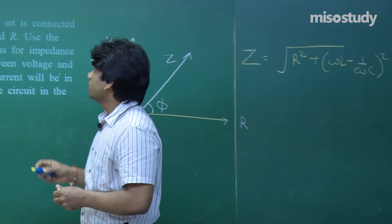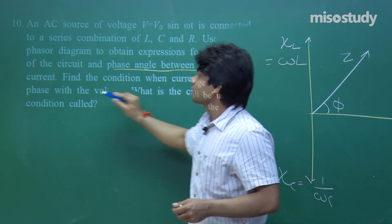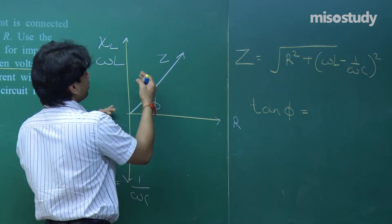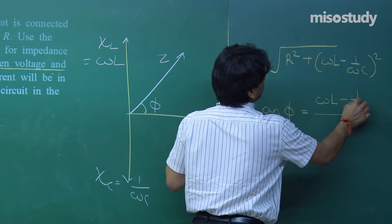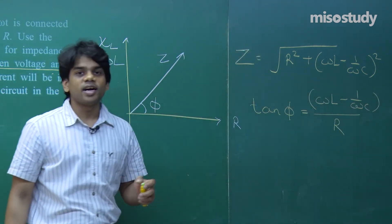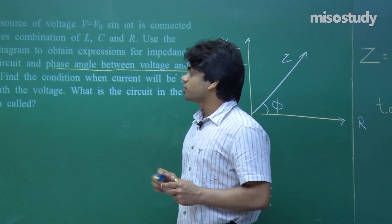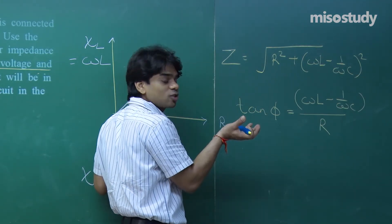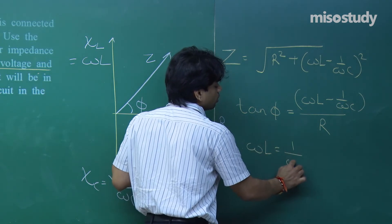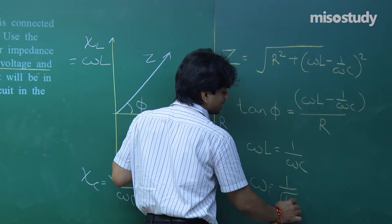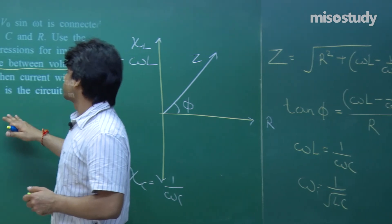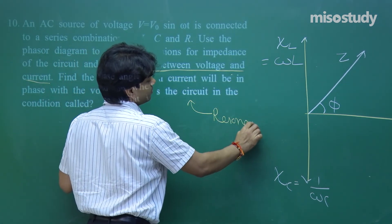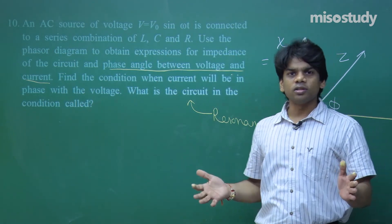This is what we have learnt from the phasor diagram. For the condition when current will be in phase with the voltage: ωL = 1/(ωC), so the reactance due to inductance and capacitance is zero, giving ω = 1/√(LC). That is the case of resonance. The circuit in this condition is called a resonant circuit.